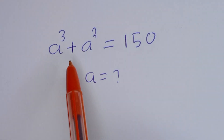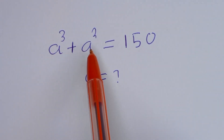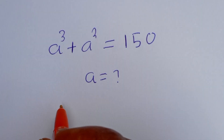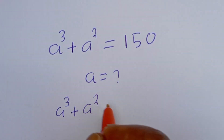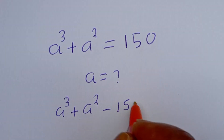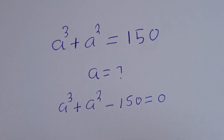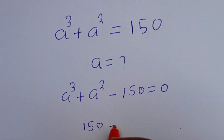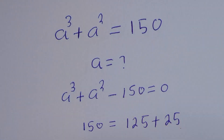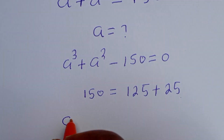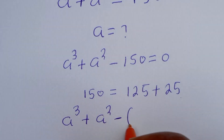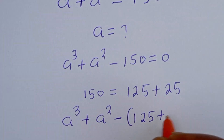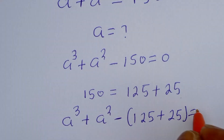Hello. How to solve for a in this equation: a to the power of 3 plus a squared is equal to 150. Here we have a to the power of 3 plus a squared, then minus 150 is equal to 0. Now, 150 is equal to 125 plus 25, so this is a to the power of 3 plus a squared minus 125 plus 25 is equal to 0.